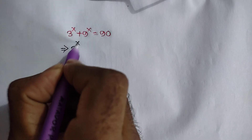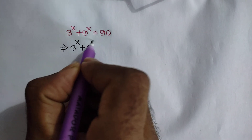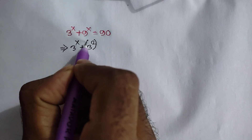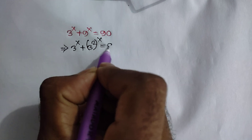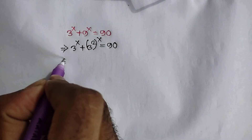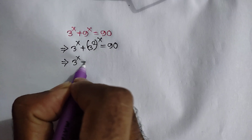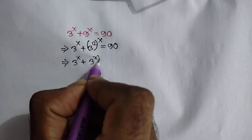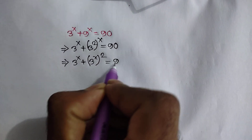We rewrite: 3 to the power x plus 3 squared — because 3 squared is the same as 9 — whole to the power x is equal to 90. So this becomes 3 to the power x plus 3 to the power 2x, which is 3 to the power x whole squared, is equal to 90.